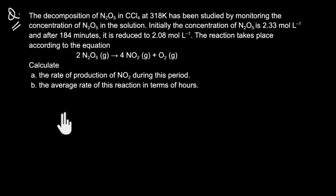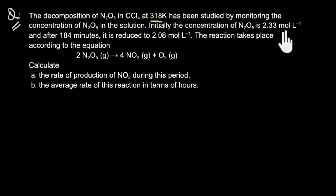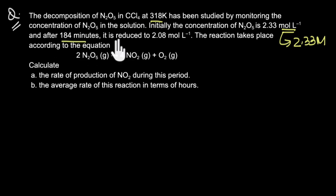Let's try solving a numerical. The decomposition of N2O5 in CCl4 at 318 Kelvin has been studied by monitoring the concentration of N2O5 in the solution. Initially, the concentration of N2O5 is 2.33 moles per liter — moles per liter as we know is molarity — so initially the concentration of N2O5 is 2.33 molar. And after 184 minutes, it is reduced to 2.08 molar.